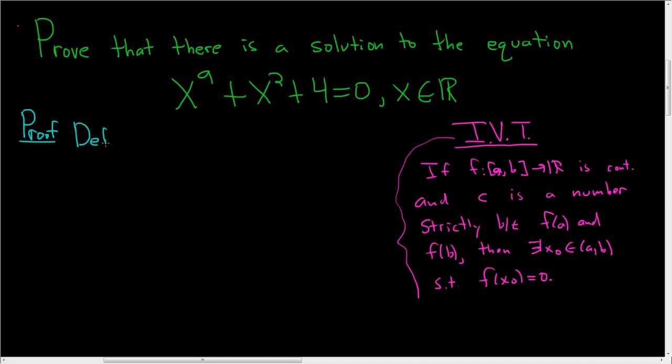Define f from R into R by f of x, and the natural choice is to set it equal to the left-hand side of our equation. So this is equal to x to the 9th plus x squared plus 4.